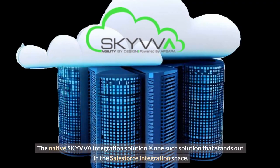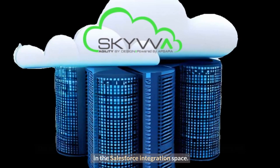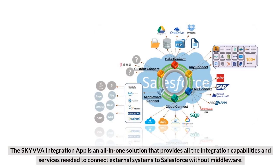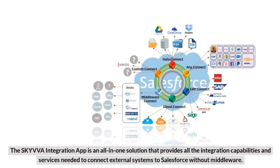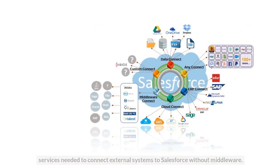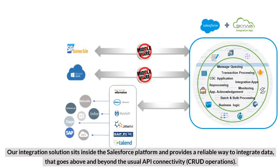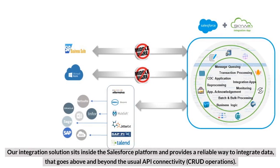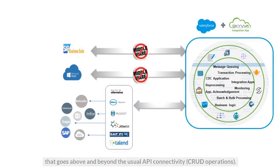The native Skyva integration solution stands out in the Salesforce integration space. The Skyva integration app is an all-in-one solution that provides all the integration capabilities and services needed to connect external systems to Salesforce without middleware. Our integration solution sits inside the Salesforce platform and provides a reliable way to integrate data that goes above and beyond the usual API connectivity and CRUD operations.